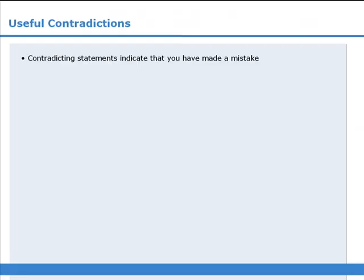To summarize, if you are tackling a data sufficiency question and the two statements appear to contradict each other, then that means you must have made a mistake somewhere, and you will have to go back and recheck your calculations.